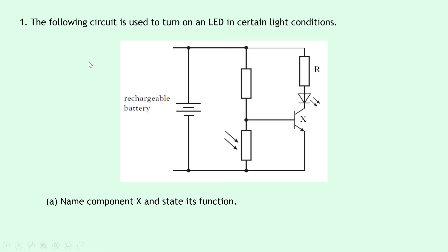Question one says that the following circuit is used to turn on an LED in certain light conditions. We have a rechargeable battery, a fixed resistor and an LDR, and then we have a component X and an LED next to a resistor R.